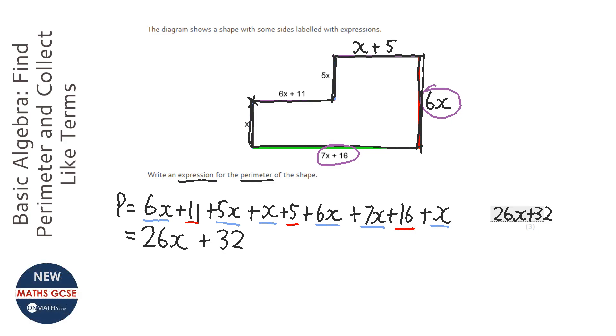If this length here is 6x, then these two here would add together to make 6x, so in total we have 12x going down. All the ones going across is going to be double this one, so it's all going to add together to make 14x plus 32, and then if you add those together that would also give us the 26x plus 32.